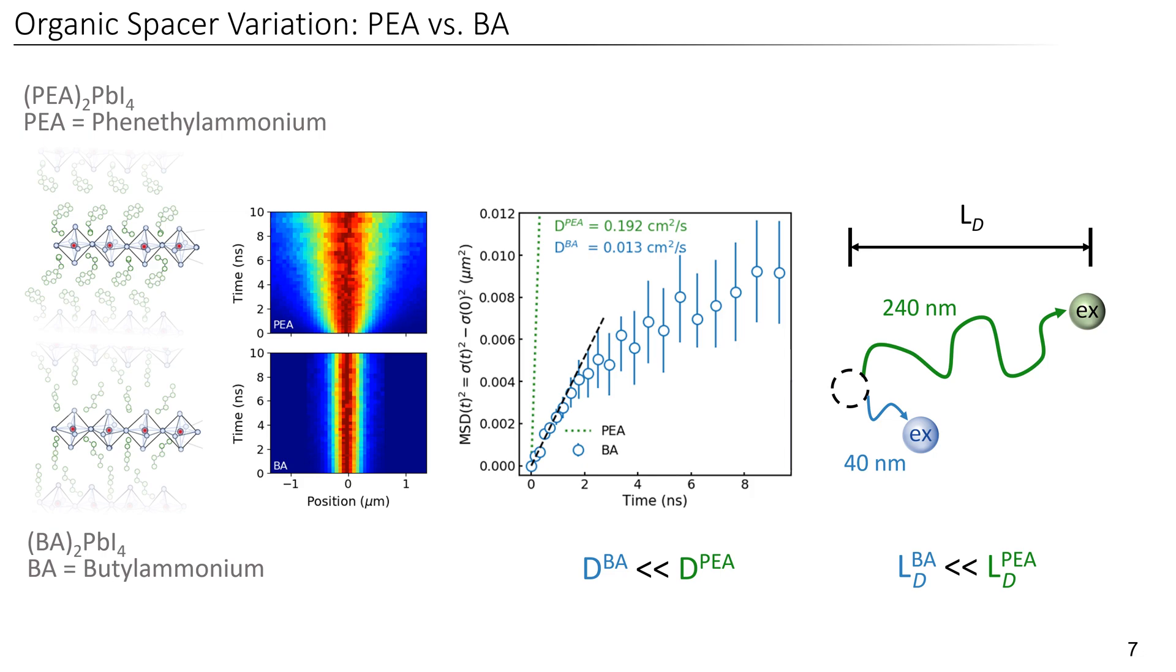For example, for solar cells, it is really beneficial to have long diffusion length to be able to extract the excitons that are generated by the absorbed light. Seeing such a big difference is especially surprising, as organic spacers normally don't change the optoelectronic properties of perovskites too much, and raises the question, where does this difference come from?